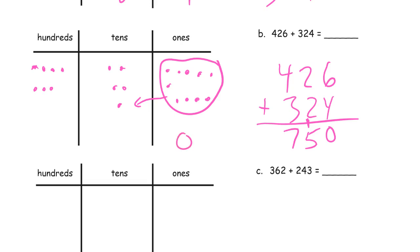So zero here, five here. And count our hundreds. One, two, three, four, five, six, seven of those. Seven hundred fifty.